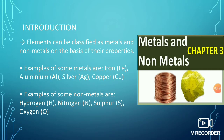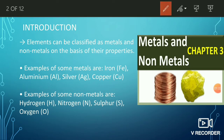Elements can be classified as metals and non-metals on the basis of their properties. In the periodic table, elements are identified as metals or non-metals based on their physical properties and chemical properties.